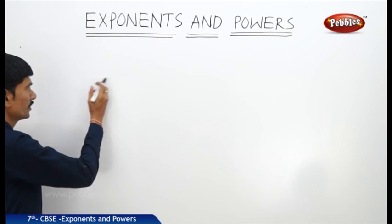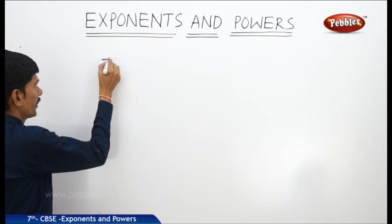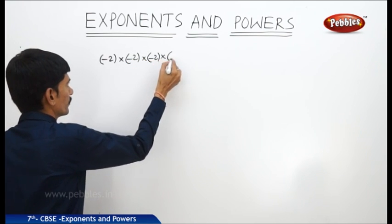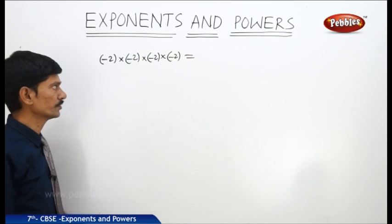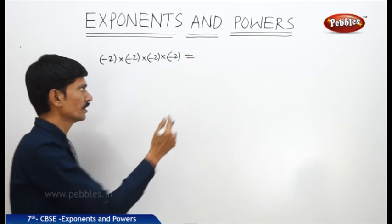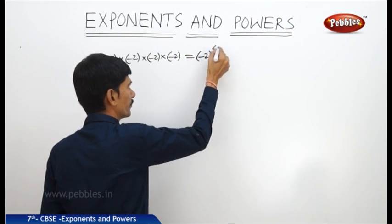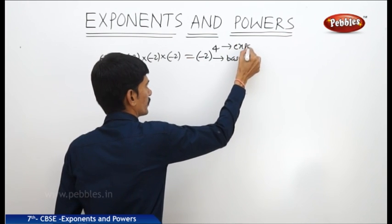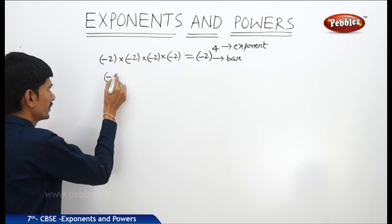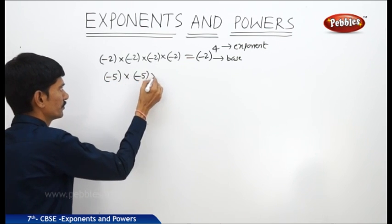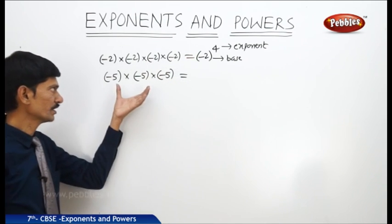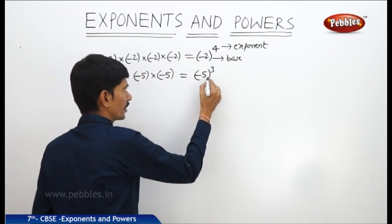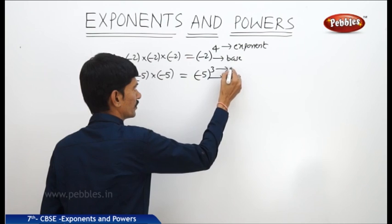Now, what about exponents of negative numbers? For example, if minus 2 is multiplied 4 times — (−2) × (−2) × (−2) × (−2) — we write this as (−2) to the power of 4, or (−2) whole to the power of 4. Here, −2 is the base and 4 is the exponent. Similarly, if −5 is multiplied 3 times — (−5) × (−5) × (−5) — this equals (−5) whole to the power of 3. Here, −5 is the base and 3 is the exponent.